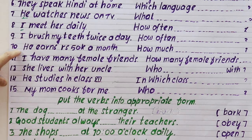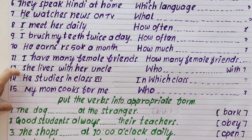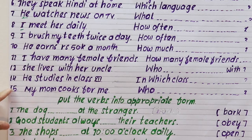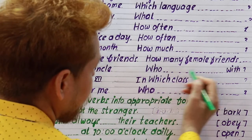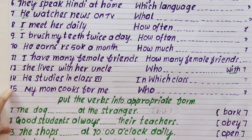I brush my teeth twice a day. How often do you brush your teeth? He earns rupees 50,000 a month. How much does he earn? I have many female friends. How many female friends do you have?